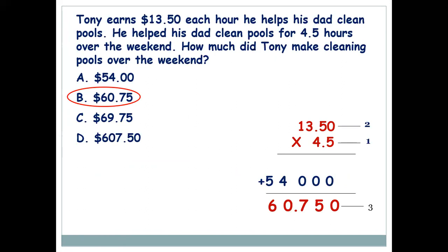The next one: Tony earns $13.50 each hour helping his dad clean pools. He helped his dad for 4.5 hours over the weekend. How much did Tony make? The operation here is multiplication of decimal numbers. For one hour he earns $13.50, so for 4.5 hours you do 13.50 × 4.5. Take both numbers as whole numbers — 1350 and 45 — and note the decimal places separately on the side.